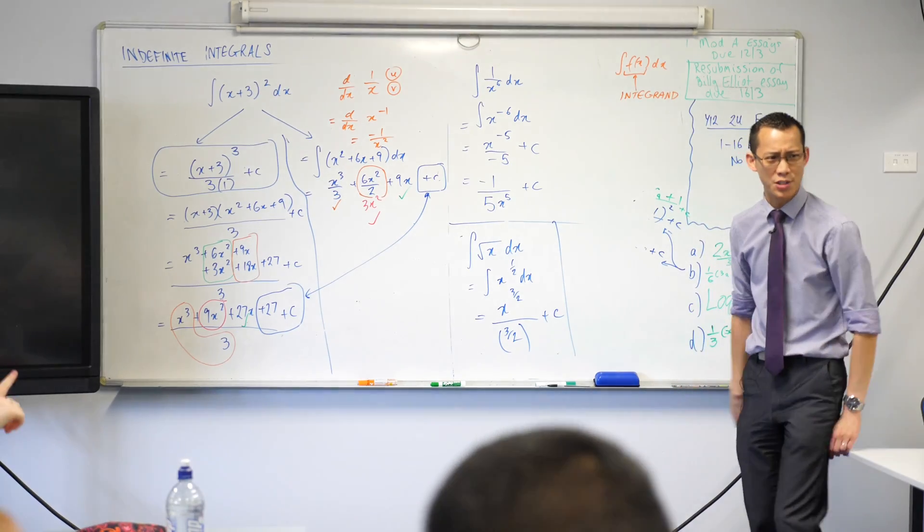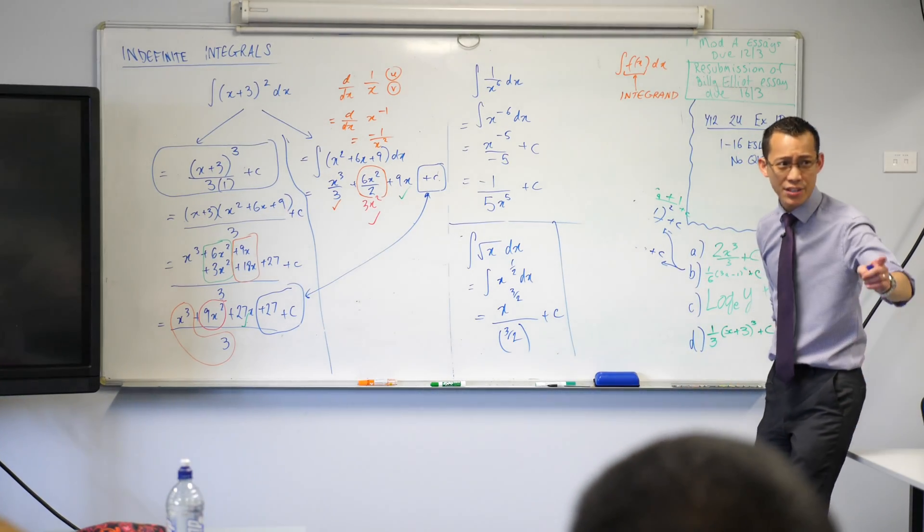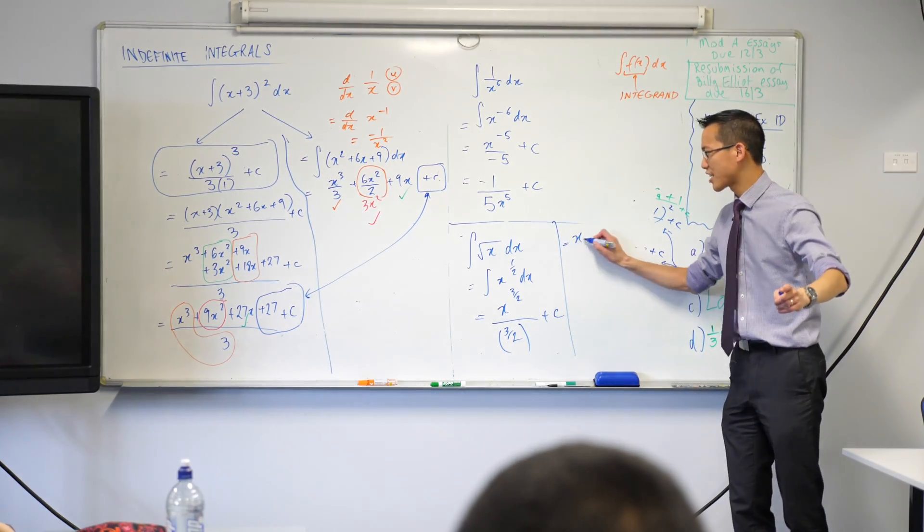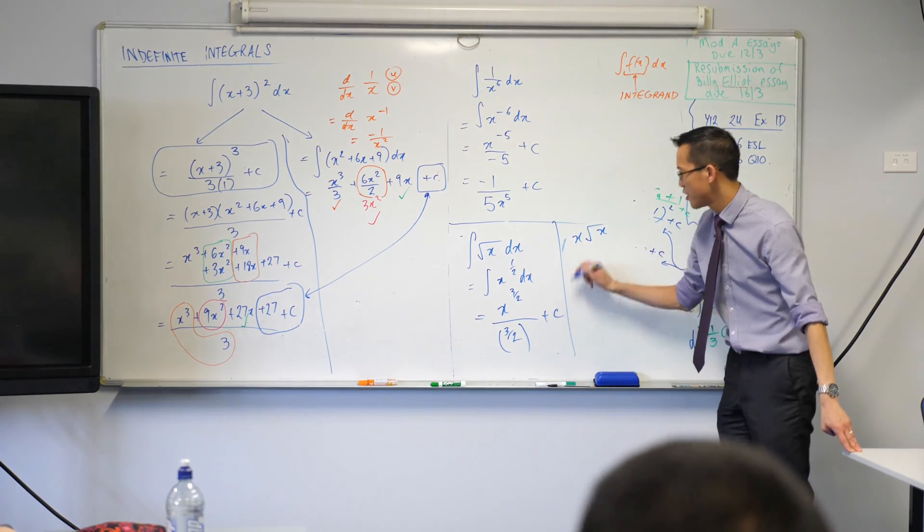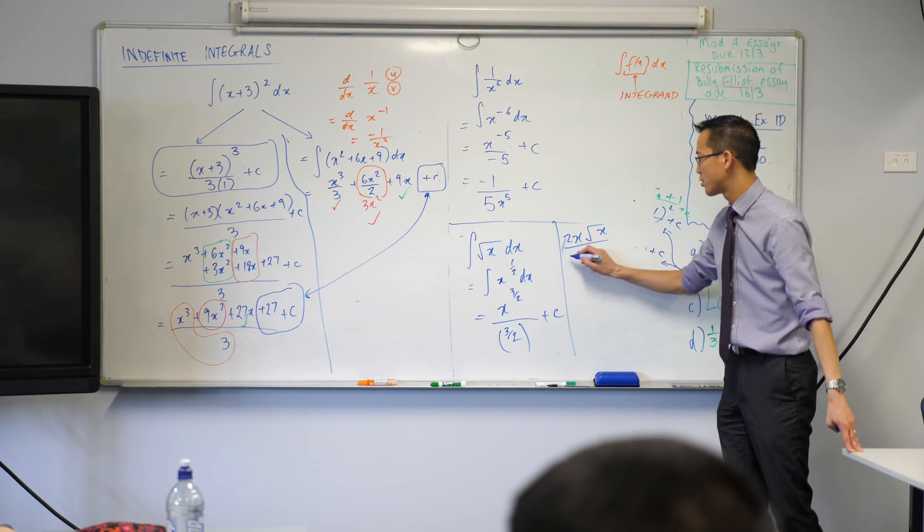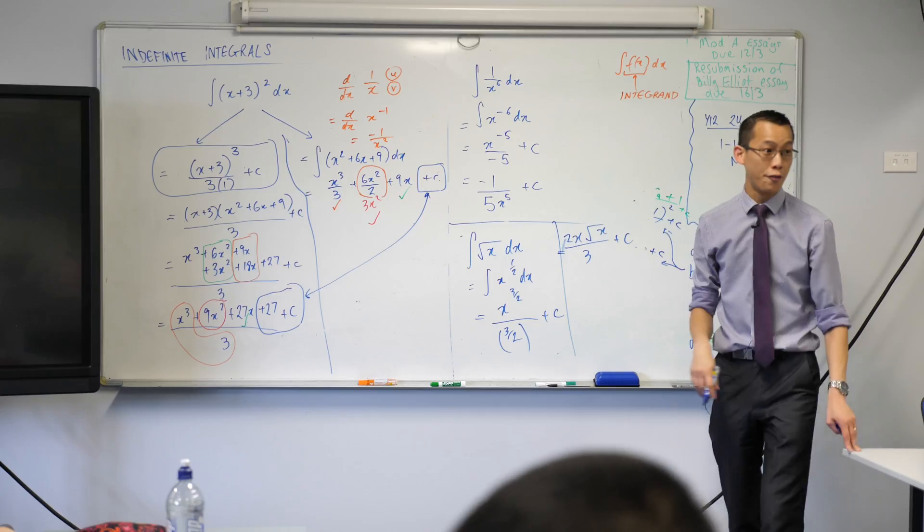X. It's actually X root X. That's a bit sneaky, that one. That division by 2 on the bottom actually goes up onto the top, and then you're finished.